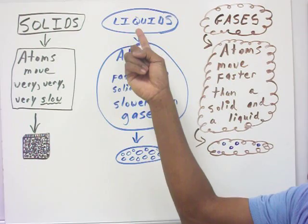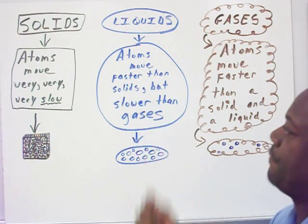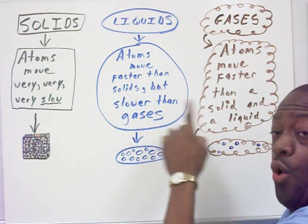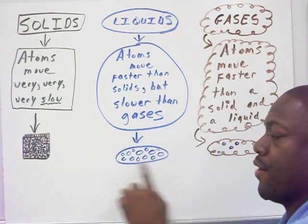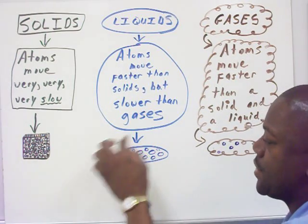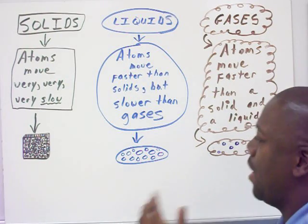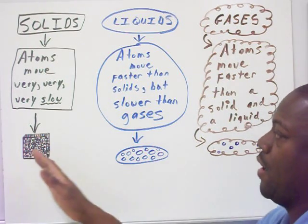We then have our liquids where the atoms move faster than the solids but slower than the gases. Here I have a puddle of water. Notice here in the illustration the circles which represent atoms are much more spread apart than they are of the solids.